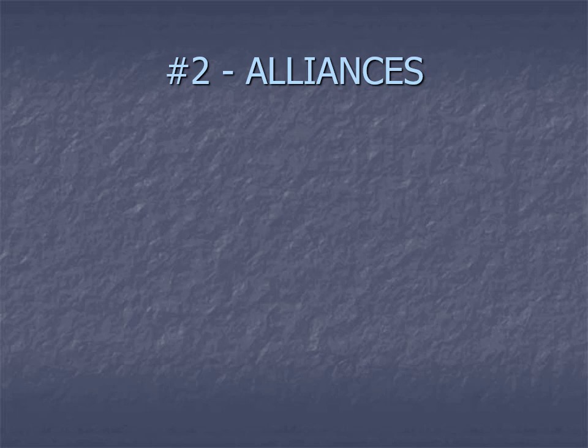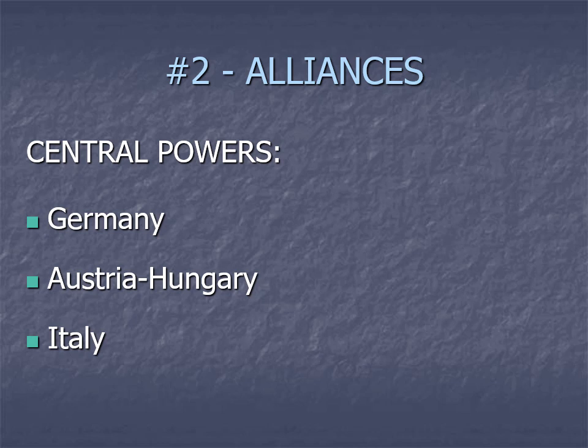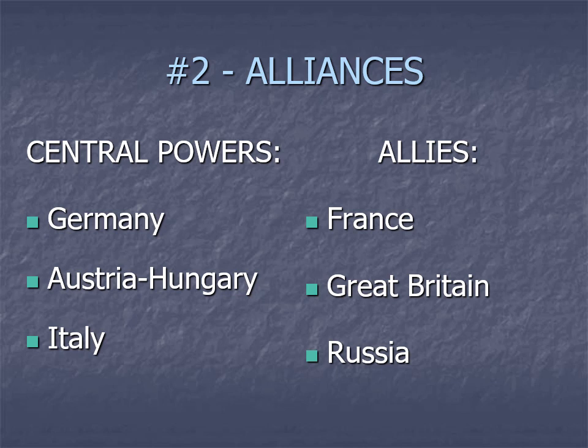There are two major alliances that have formed in Europe at the time. The first is called the Central Powers, which includes Germany, Austria-Hungary, and Italy. The opposing alliance, the Allies, consists of France, Great Britain, and Russia. What you'll note from this is that there's somebody notably missing — the United States. We're not entangled in any of these alliances at this point, which is what's going to allow the U.S. to stay out of the war, at least at the beginning, because they don't feel loyal to either side.